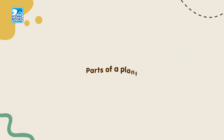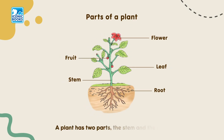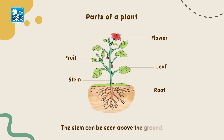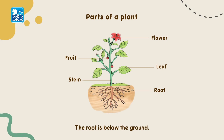Parts of a plant: A plant has two parts — the stem and the root. The stem can be seen above the ground. It has leaves, flowers and fruits. The root is below the ground.